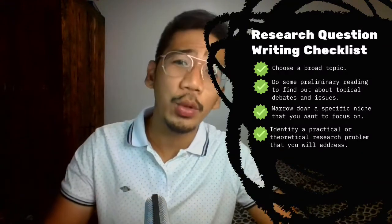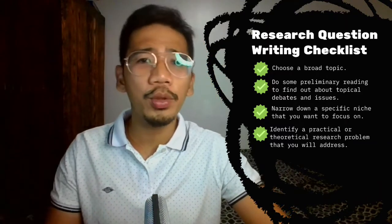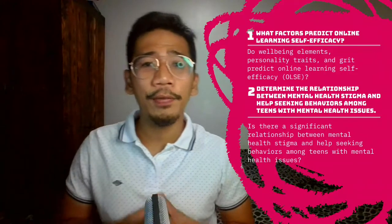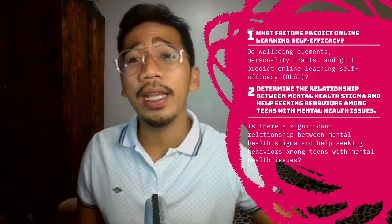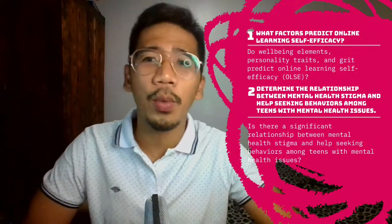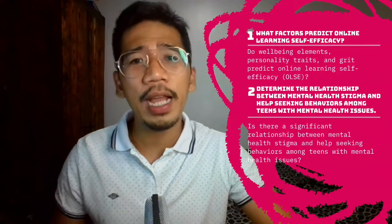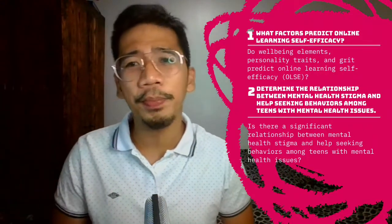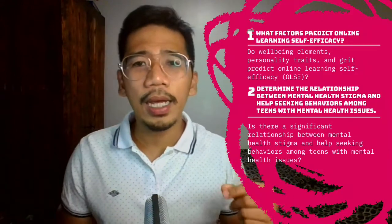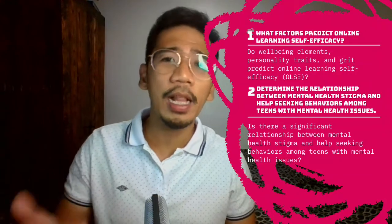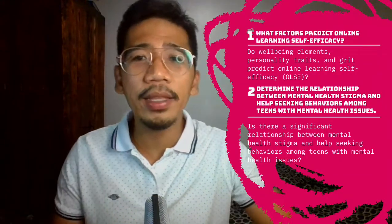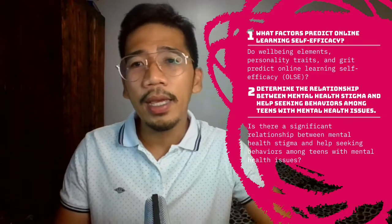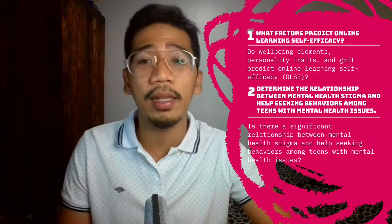Think about exactly what you want to know and how it will contribute to resolving the problem. For example, if you have a research problem asking for the factors predicting online learning self-efficacy, you may want to ask: Do well-being elements, personality traits, and grit predict online learning self-efficacy? Furthermore, if your research problem is to determine the relationship between mental health stigma and help-seeking behaviors among teens, you may ask: Is there a significant relationship between mental health stigma and help-seeking behaviors among teens with mental health issues?